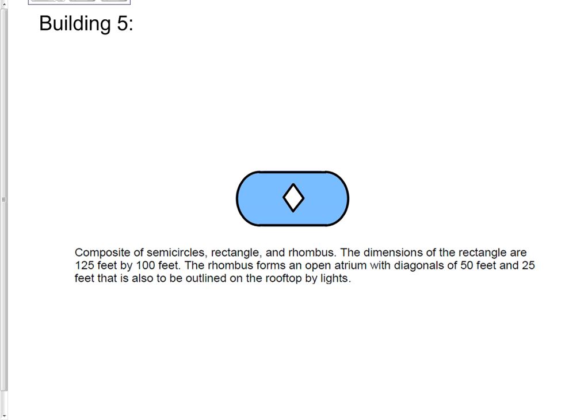Building five is a composite of semicircles, a rectangle, and a rhombus. The dimensions of the rectangle are 125 feet by 100 feet. The rhombus forms an open atrium with diagonals of 50 feet and 25 feet.